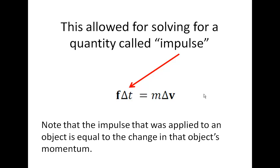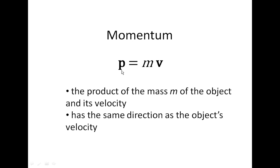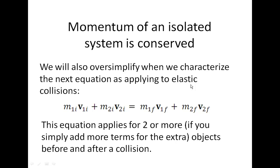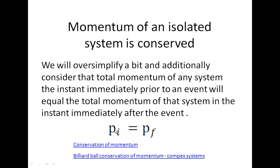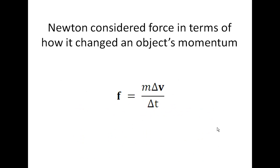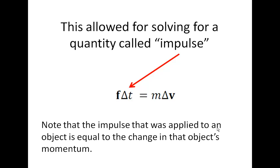To summarize, we have the basic equation for momentum: p equals mv. Momentum is conserved — initial momentum of the whole system equals final momentum of the whole system. We sum up all the momenta of different objects before and after a collision, and they must be equal in an isolated system or when considering just the instant before and just after an event. Finally, impulse — derived from Newton's view of force — is force times change in time, equal to mass times change in velocity, which is the change in momentum of an object.